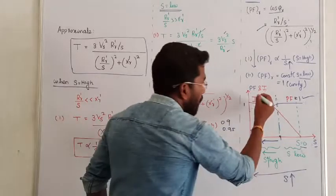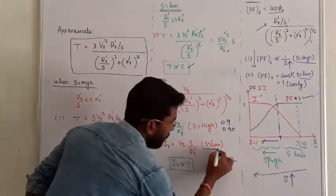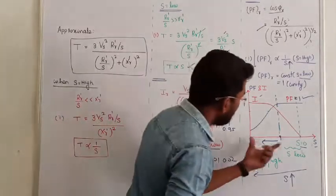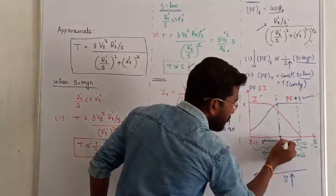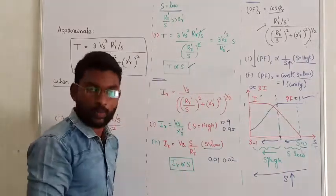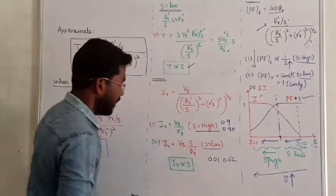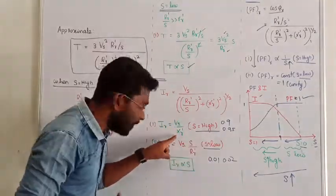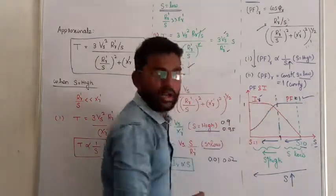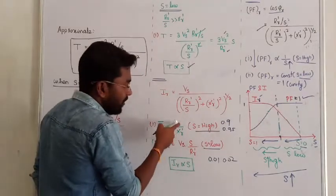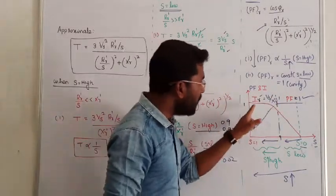Next: current versus slip, that is rotor current versus slip. From this observation, when slip is low, rotor current and slip are directly proportional. In the low slip zone, as slip value increases, rotor current increases. When slip becomes very high, rotor current will become independent of slip value — there is no change in the value of rotor current. It will be fixed at the constant value Vs divided by XR'. That is the characteristics of current versus slip.